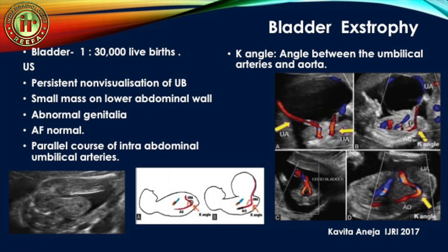Bladder exstrophy is a very rare condition occurring in 1 in 30,000 live births. There is persistent non-visualization of the bladder with a small mass on the lower anterior abdominal wall. It is associated with ambiguous genitalia and amniotic fluid is normal. To differentiate bladder exstrophy from other anterior abdominal masses, the K-angle was proposed by Kavita Aneja at IGRI in 2017. This is the angle between the umbilical arteries and the aorta, which is normally acute but becomes obtuse or nearly 90 degrees in bladder exstrophy.